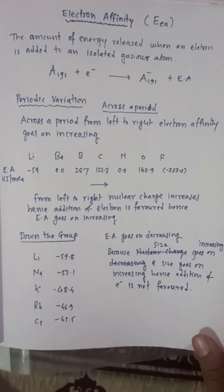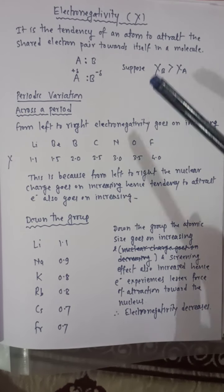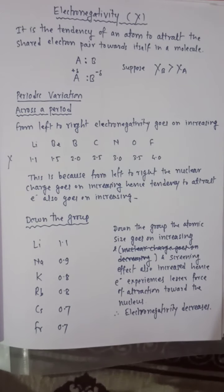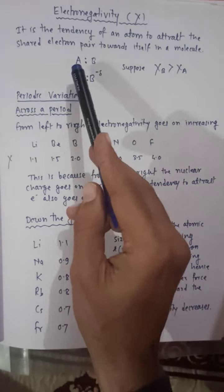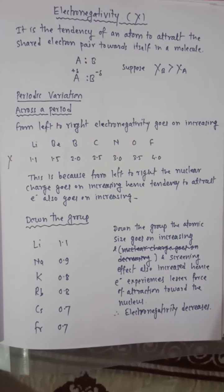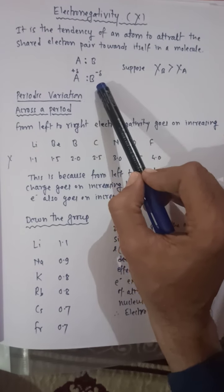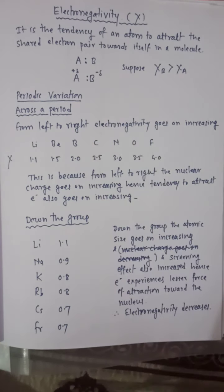Now we will see the second term: electronegativity. It is denoted by the symbol chi (χ). Electronegativity is the tendency of an atom to attract the shared pair of electrons towards itself in a molecule. In a molecule, a bond is formed by sharing the electron pair. If one atom has higher electronegativity, it will try to attract the electron pair towards itself and will acquire a partial negative charge.